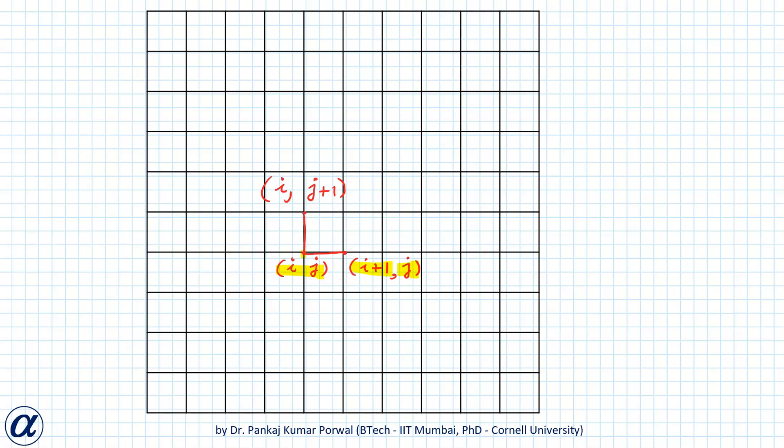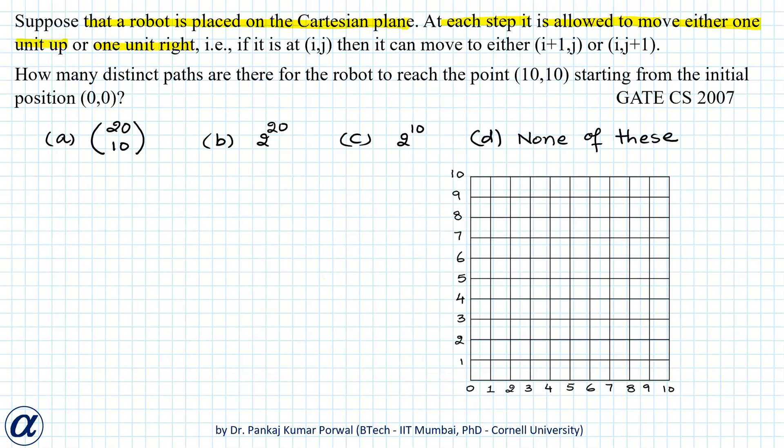We want to find how many distinct paths are there for the robot to reach the point (10,10) from the initial position (0,0). So starting from (0,0) to reach (10,10), the robot has to take 10 steps in the right direction.